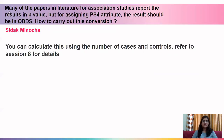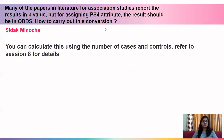The next question is by Siddhaq. Many papers report association study results in p-value, but for the PS4 attribute the result should be in odds ratio — how to carry out this conversion? You can do this conversion if the number of cases and controls are available. Refer to session 8 for details. An email will also be sent explaining how to carry out this conversion.